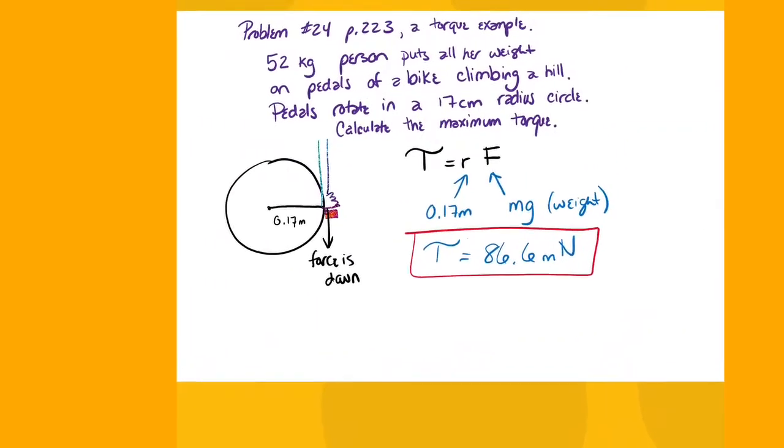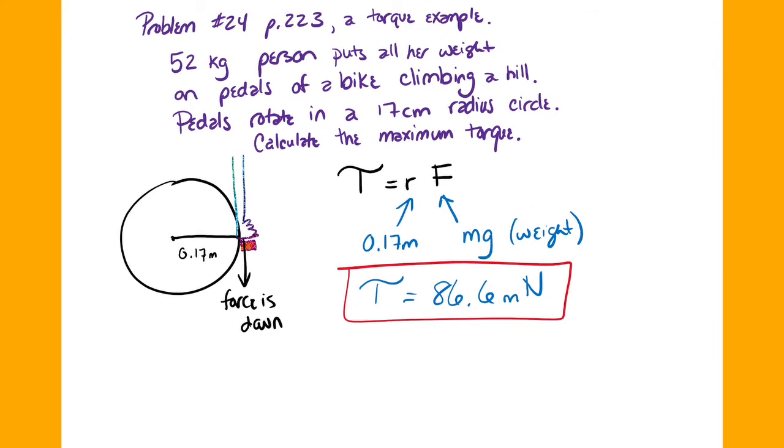So this one is problem 24 on page 223 in your book. So in this case, think about a bicycle wheel. Yes, that is supposed to be a leg of a person pressing down. So we have a 52 kilogram person who is putting all of her weight on a pedal of a bike and she's climbing up a hill. The pedals rotate in a 17 centimeter radius circle and you're going to calculate the maximum torque that the person can provide. So torque is calculated by multiplying the radius where the force is being applied times the force, and in this case the radius is 0.17 meters. The force being applied is the full force, the maximum force that this person can possibly apply is their weight straight down.